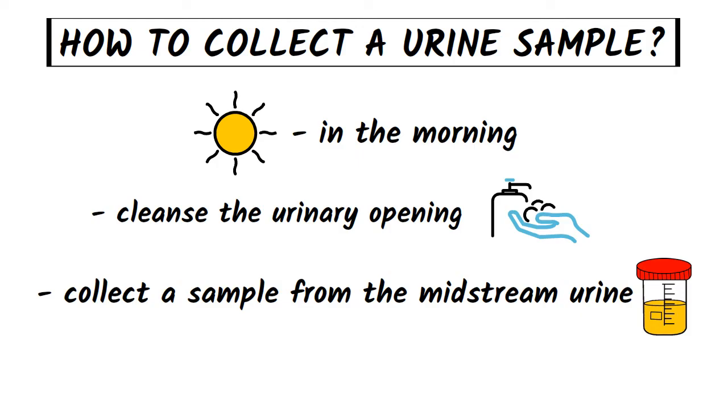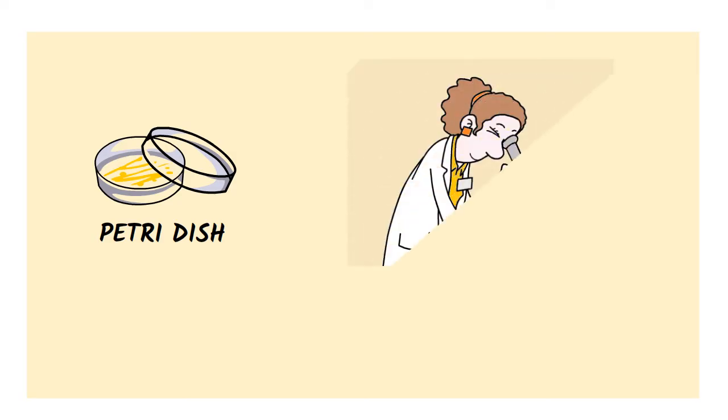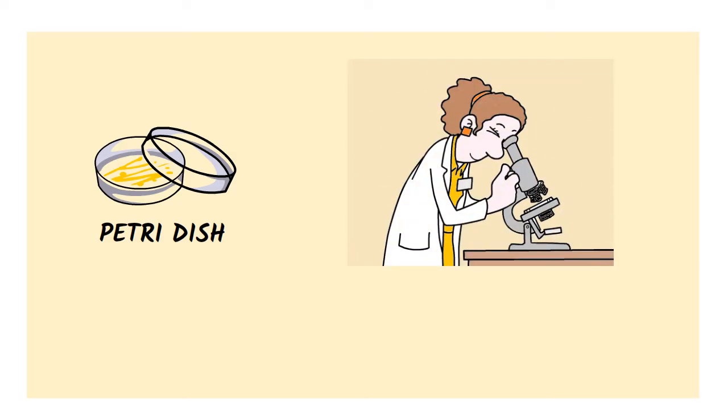Then finish urinating into the toilet and deliver the sample to a laboratory as soon as possible. A lab worker will put some drops of urine in a petri dish and store it at body temperature, so that over the next days any bacteria or yeast in the sample will multiply and grow. The lab worker will then look at the germs under the microscope to identify their type based on shape, size, and color, and will also identify how many are growing.